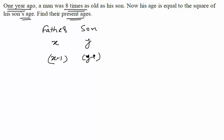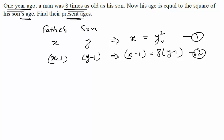Now one year ago a man was 8 times as old as his son, so the equation should look like (x-1) = 8(y-1). What about the next statement? Now his age is equal to square of his son's age, which means x = y². These are the two equations we can form according to the data given to us.